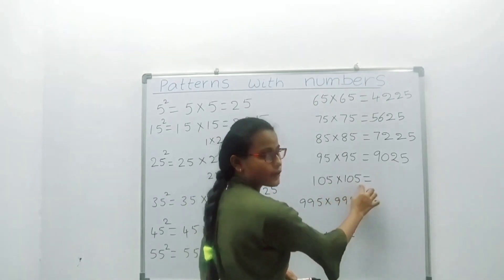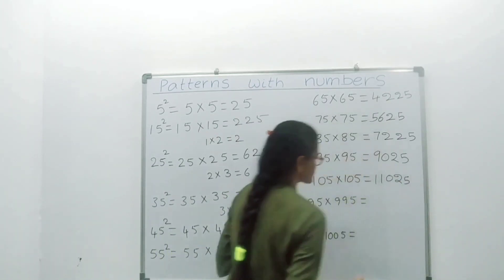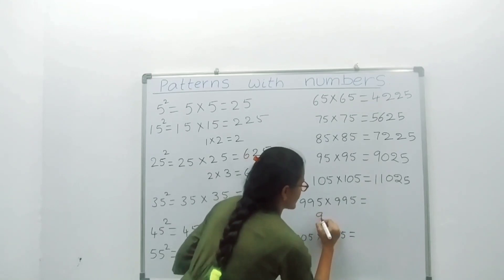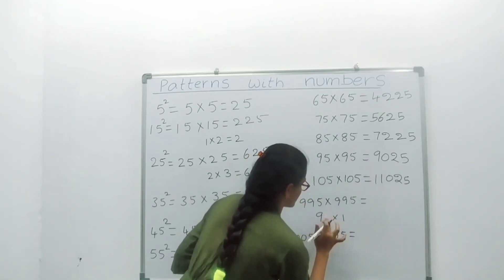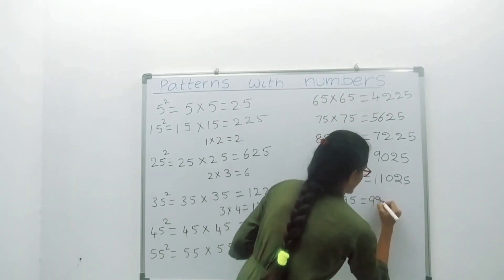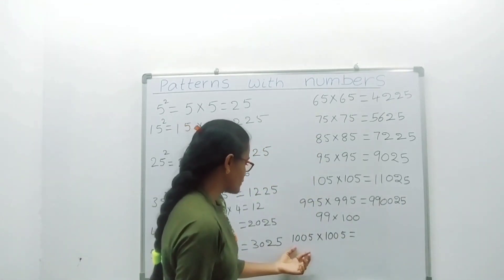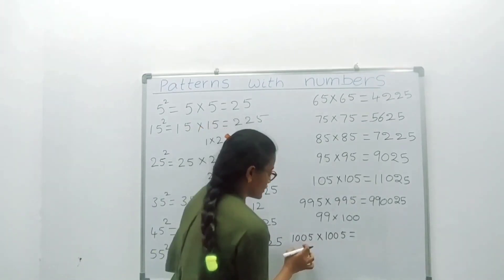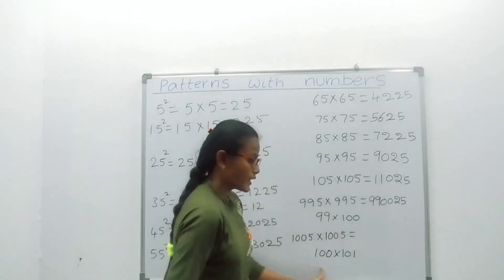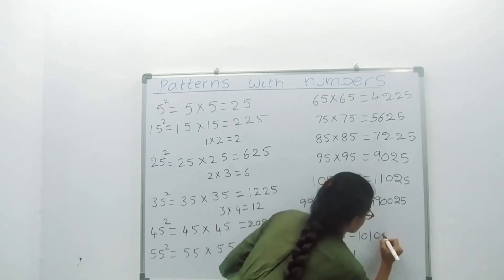105 squared: 105 into 105. We have 10; the next number is 11. 10 into 11 equals 110. Write down 25 — answer is 11025. 995 squared: 995 into 995. We have 99; the next number is 100. 99 into 100 equals 9900. Write down 25 — answer is 990025. 1005 squared: 1005 into 1005. We have 100; the next number is 101. 100 into 101 equals 10100. Write down 25 — answer is 1010025.